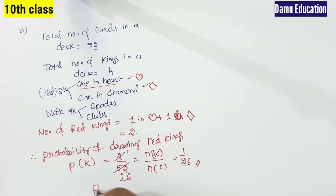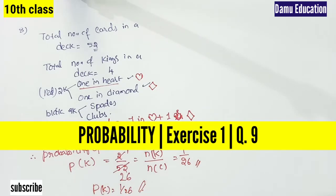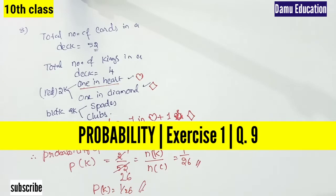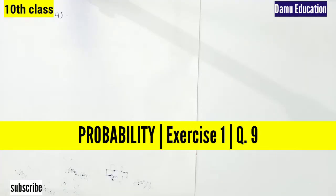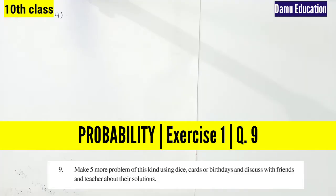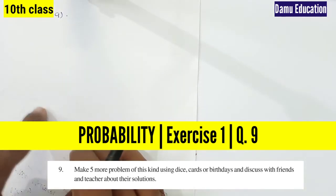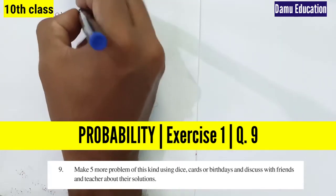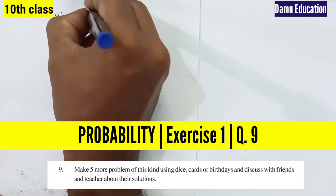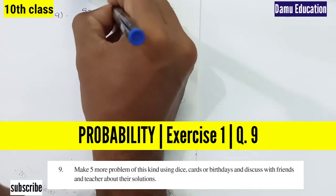Thanks for watching. Please subscribe. Now let's discuss five problems on probability using dice, cards, and birthdays. First, let's throw a dice. What is the sample space? Let's write it out.